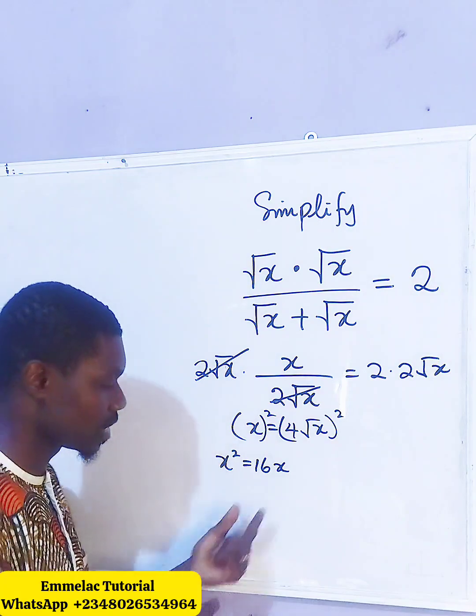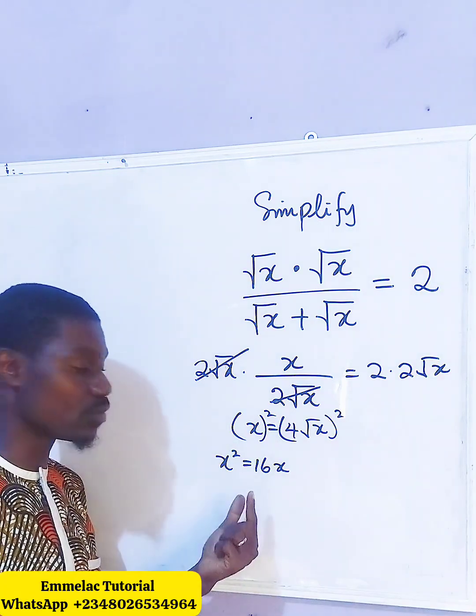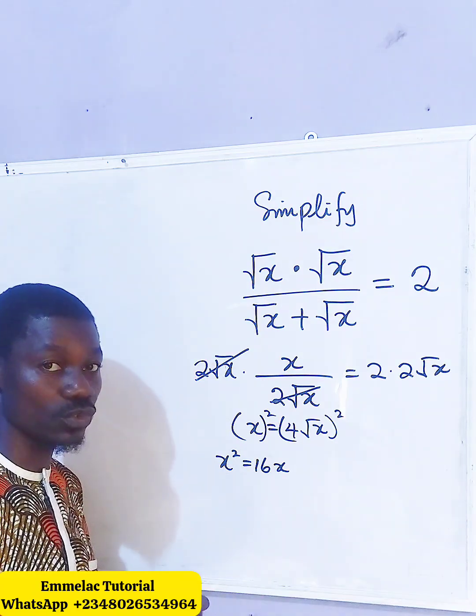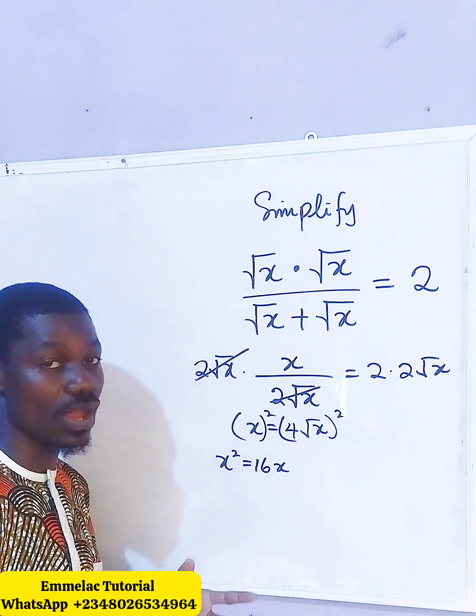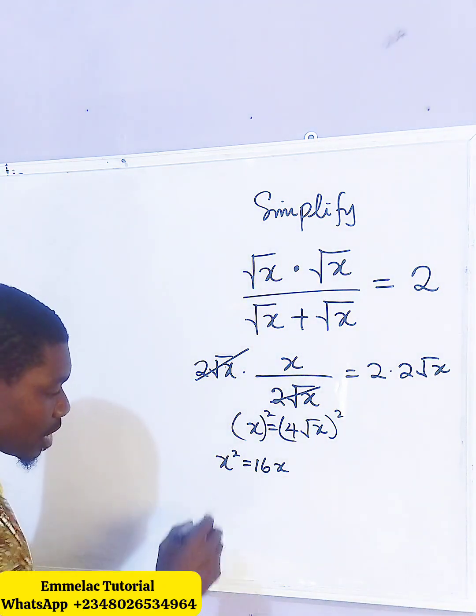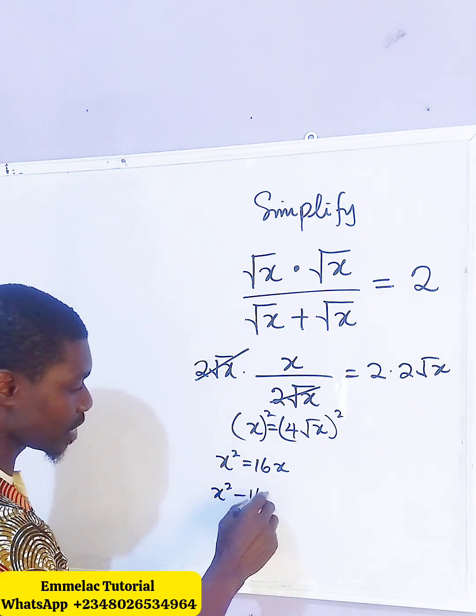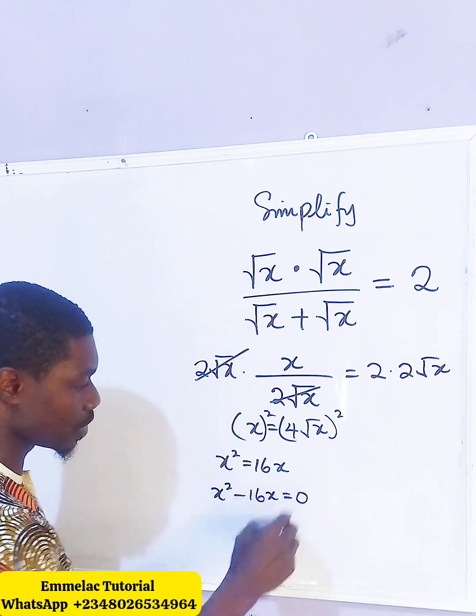Now at this point, please do not divide. The reason why you shouldn't divide is x here is having a degree of 2, which implies that x will have 2 solutions. So at this point, we have it as x raised to the power of 2 minus 16x equals 0.